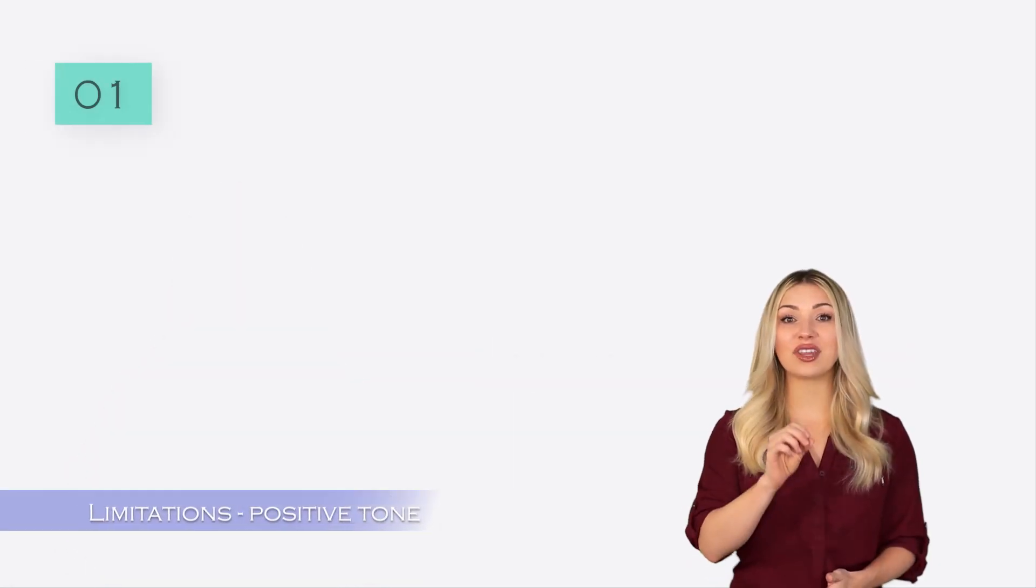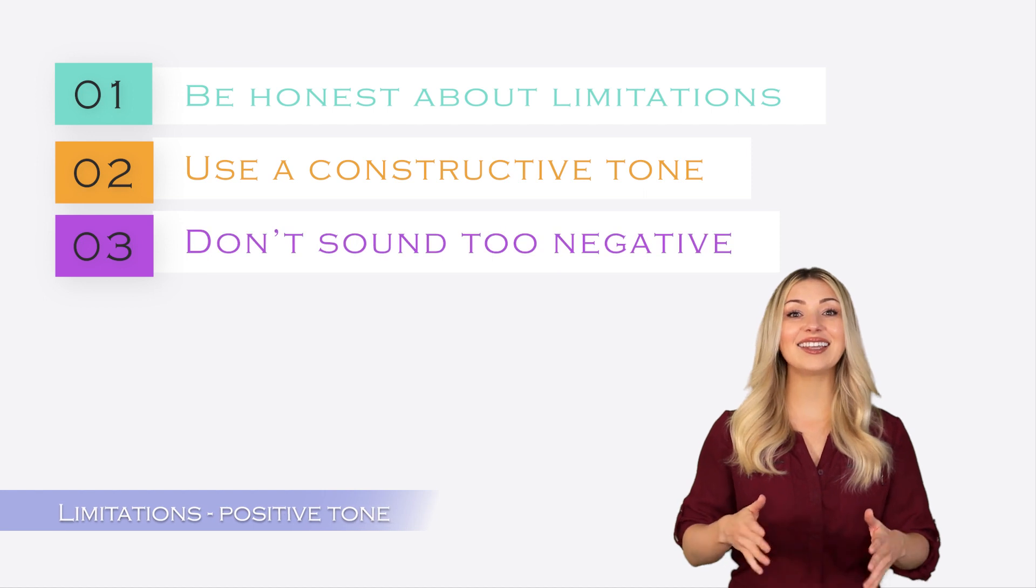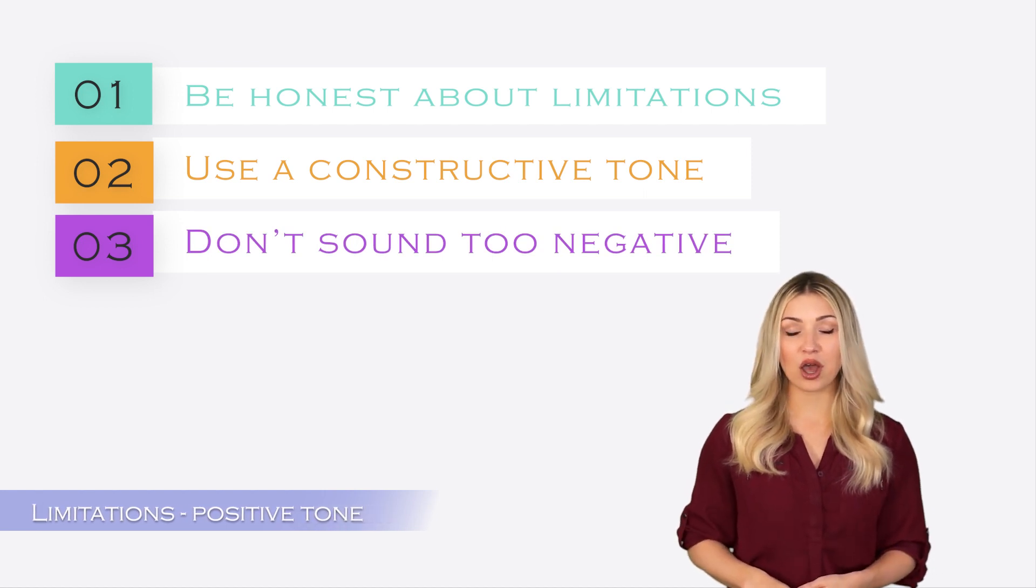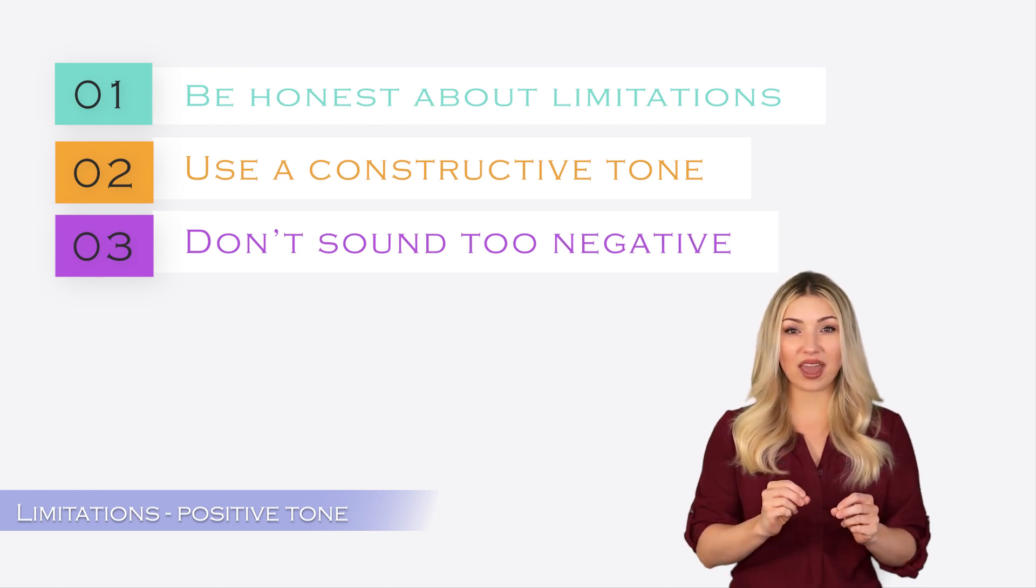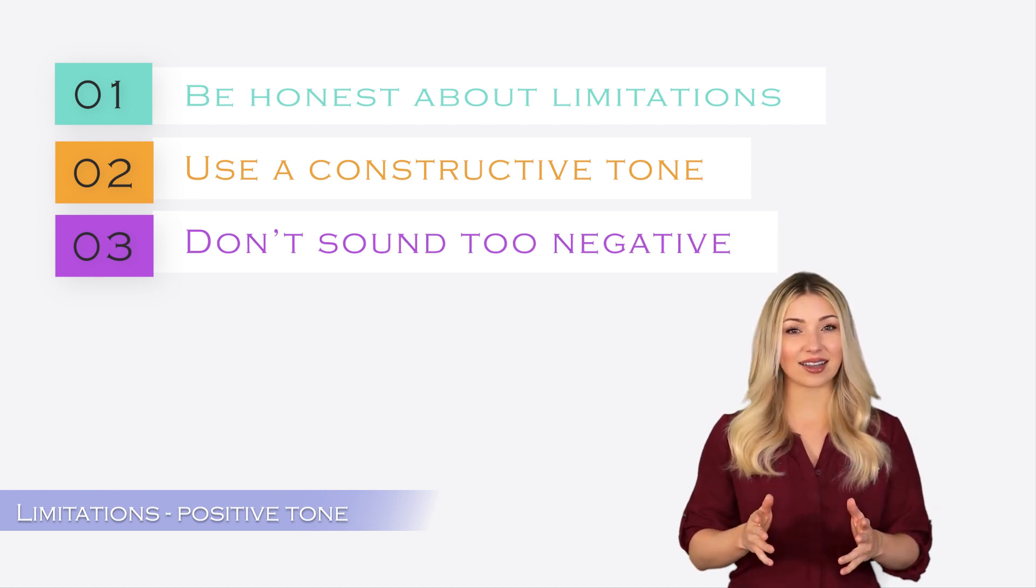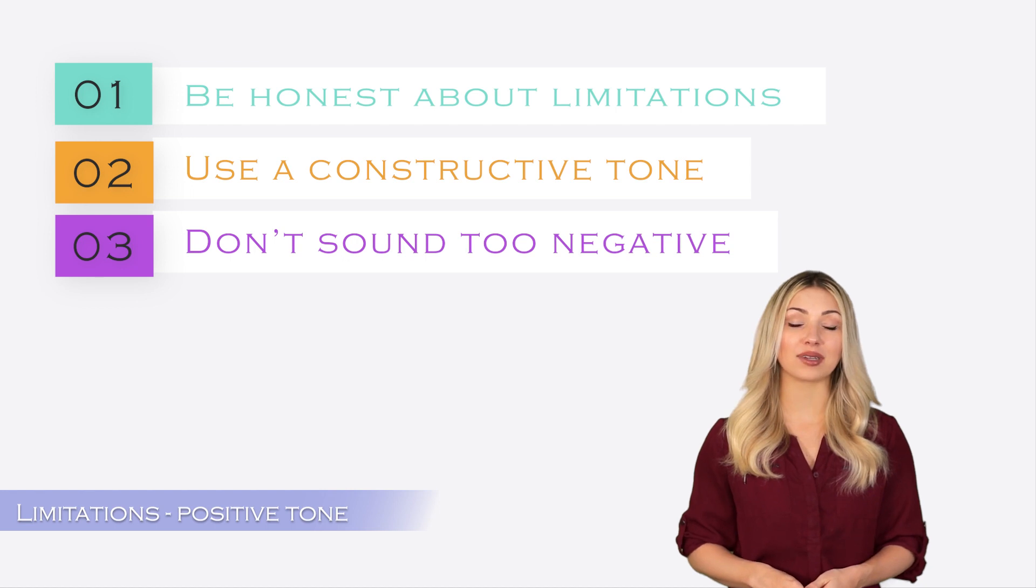You must talk about the limitations of your work in the discussion section of the paper. One of the important qualities that the scientific community expects from a researcher is honesty and admitting when they have made a mistake.